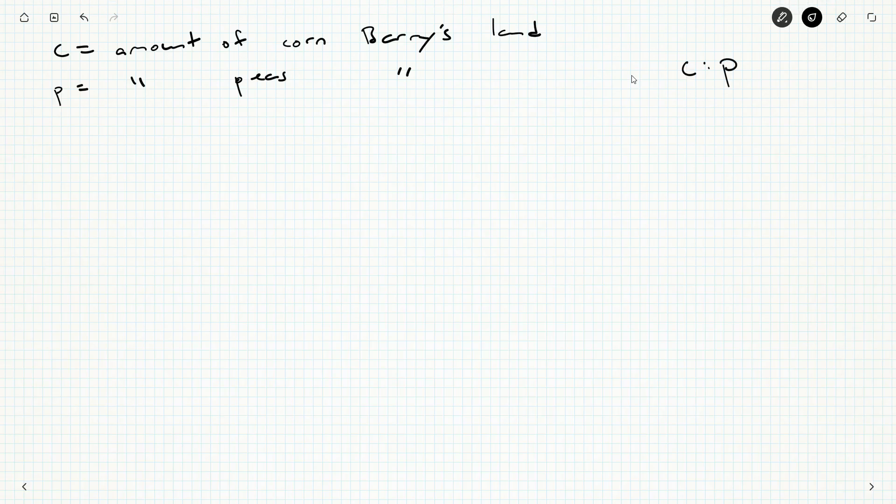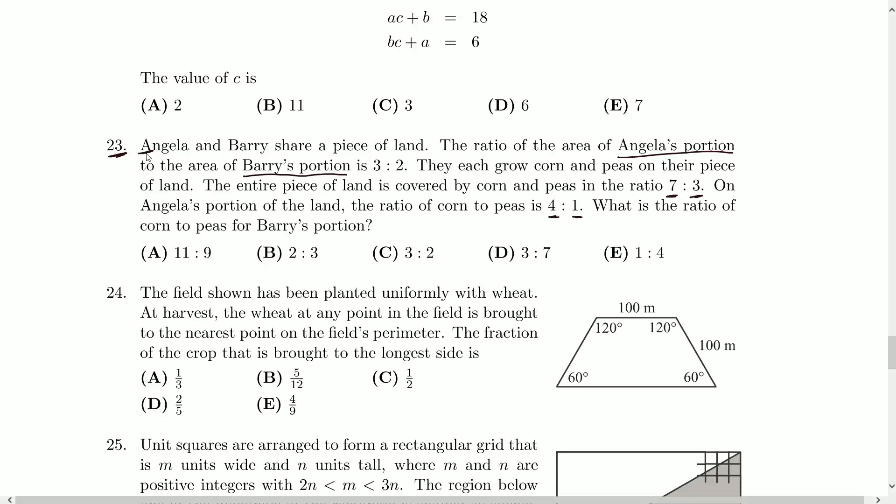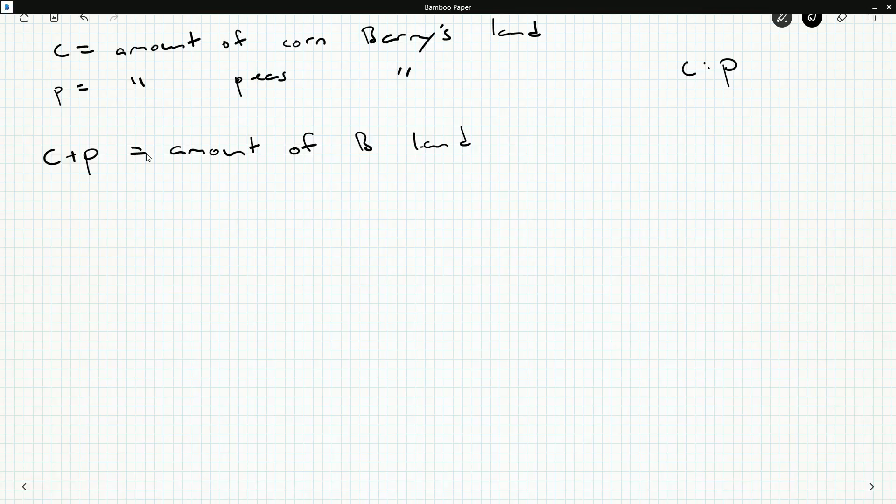Now, in total, we know that C plus P equals the amount of Barry's land. I'm going to abbreviate Barry by B, just saves me a little bit of writing here. Just like I'm going to abbreviate Angela by A. And this is why they gave them A and B names. So that's the amount of land Barry has.